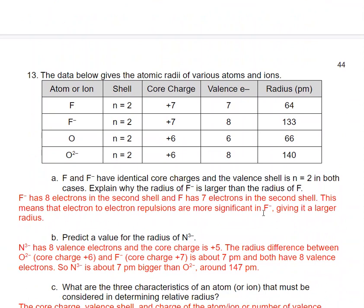Looking at fluorine and fluoride, they have the same core charge but different radii. This is because of electron-to-electron repulsions. As you add more electrons to an atom, those repulsions between electrons become more significant. Because fluoride has one more electron, the electron-electron repulsions are a little stronger, the electrons are pushed a little farther from the nucleus, and the radius is a little larger.